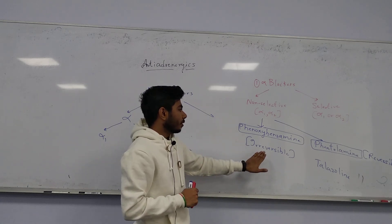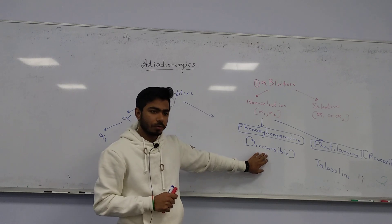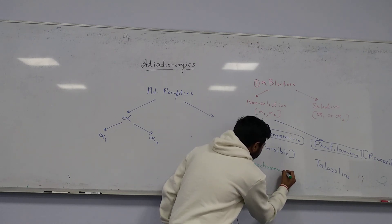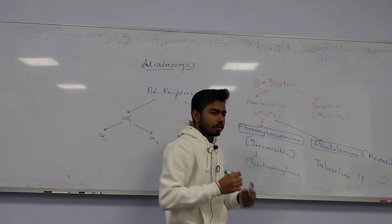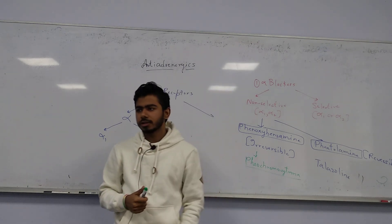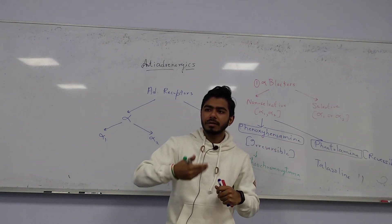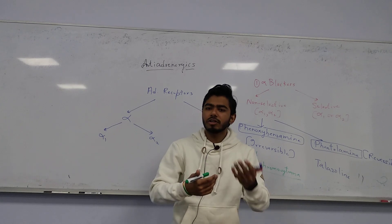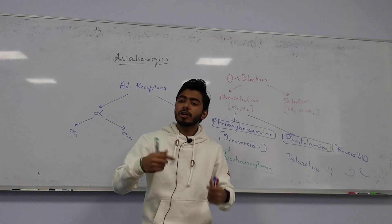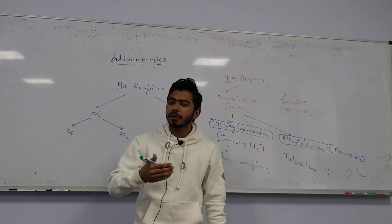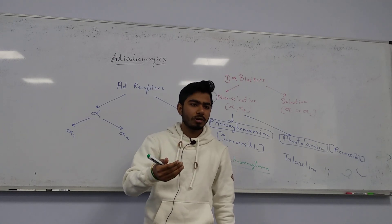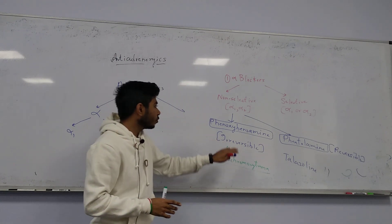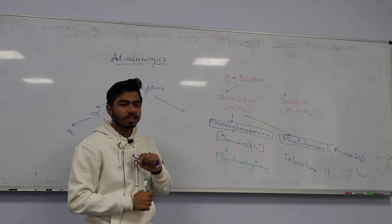Phenoxybenzamine is used in cases of pheochromocytoma. The adrenal gland has a cortex and medulla. If the adrenal medulla is over-activated, it produces catecholamines — epinephrine and norepinephrine. When these increase, they activate the sympathetic system, causing hyper-activation. Phenoxybenzamine blocks alpha 1 and alpha 2 receptors to slow this down — blocking alpha 1 on blood vessels causes vasodilation, reducing blood pressure.